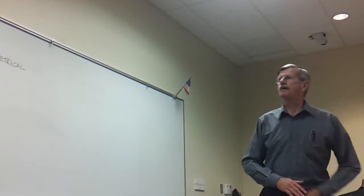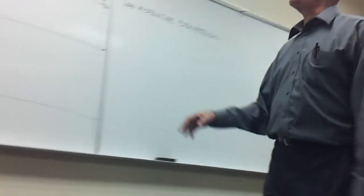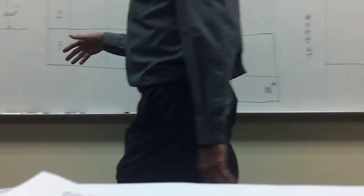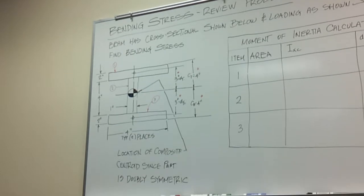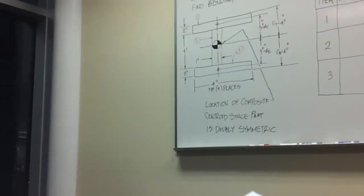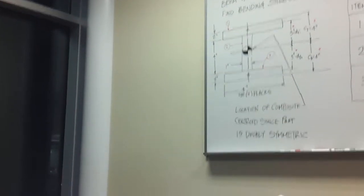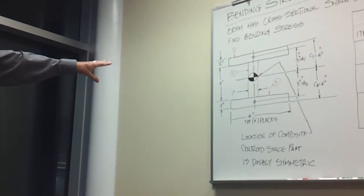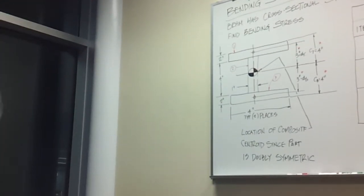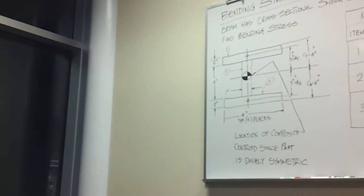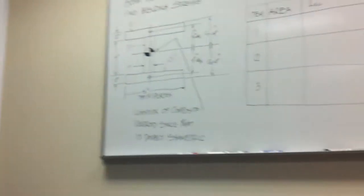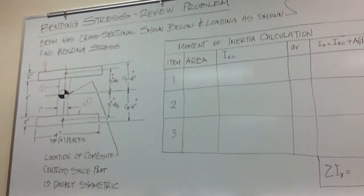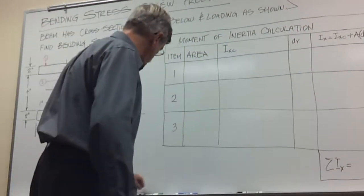Whenever you have a problem like this, there's two things you're going to have to look at. What is the moment of inertia? Because that will tell you how well that cross-section can withstand the bending load, the internal bending load. This tells you what the internal bending load is - the internal moment. Let's do a few things here.